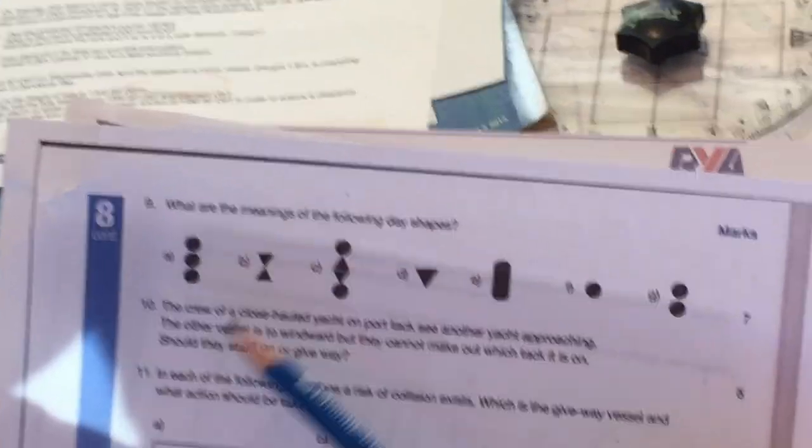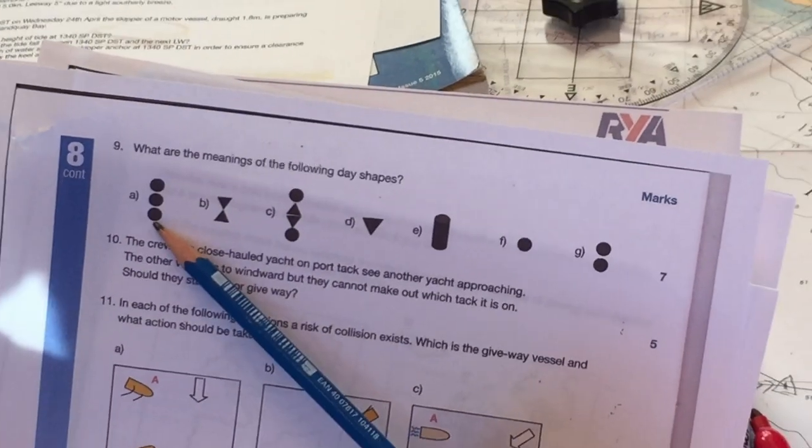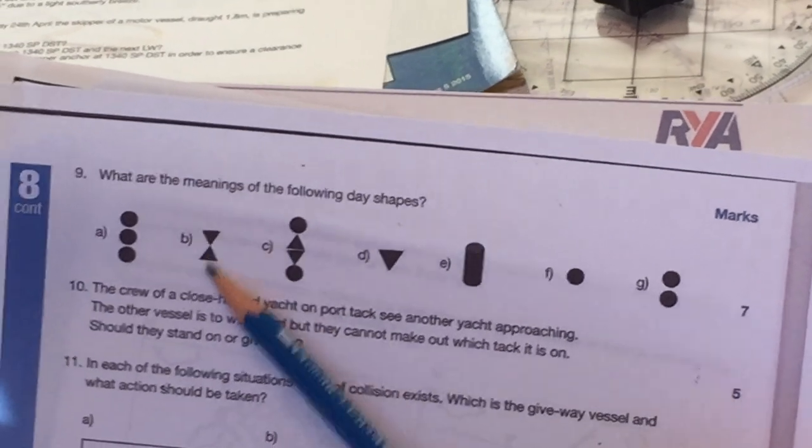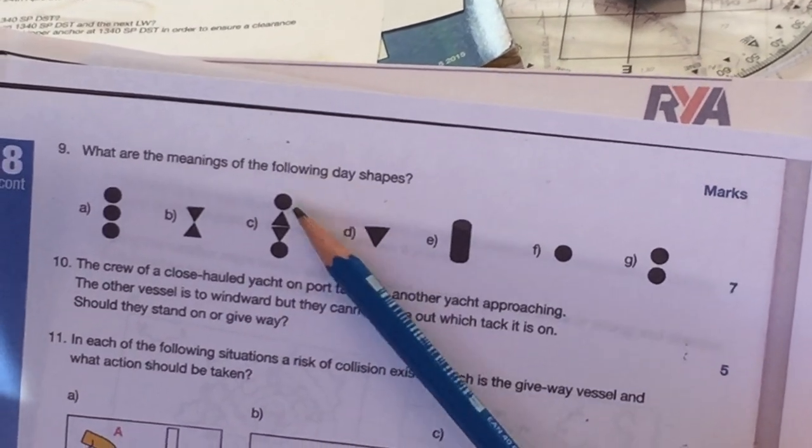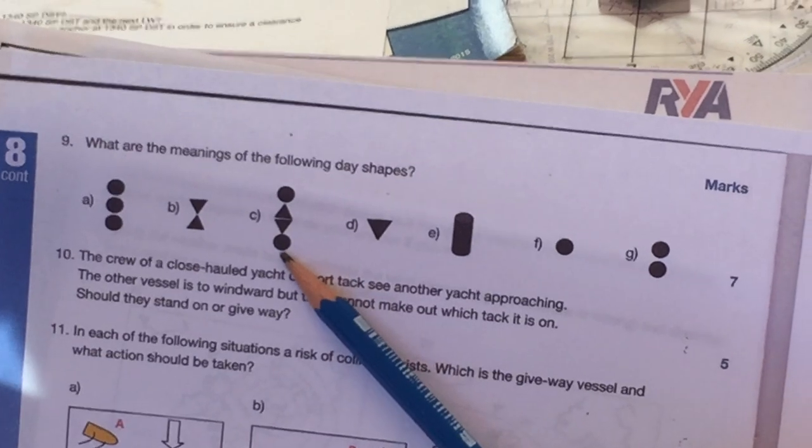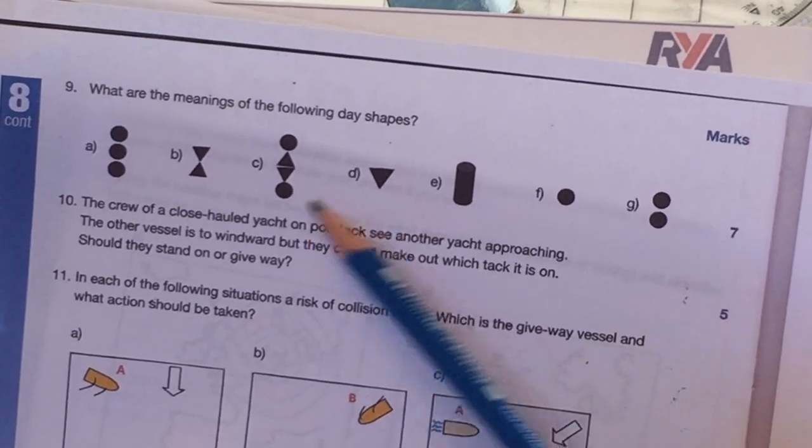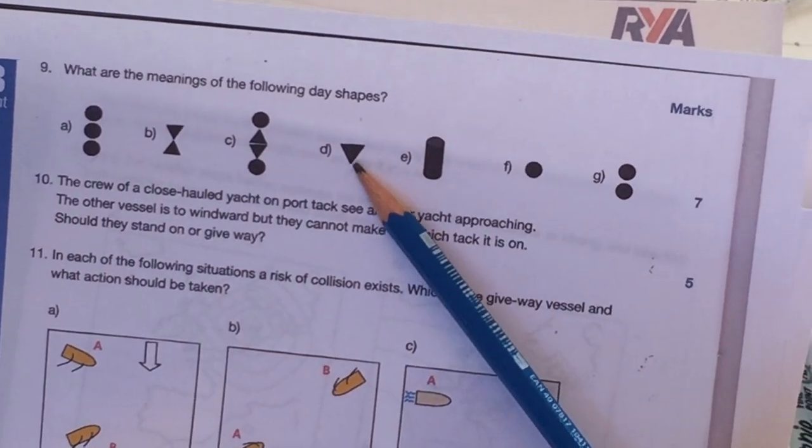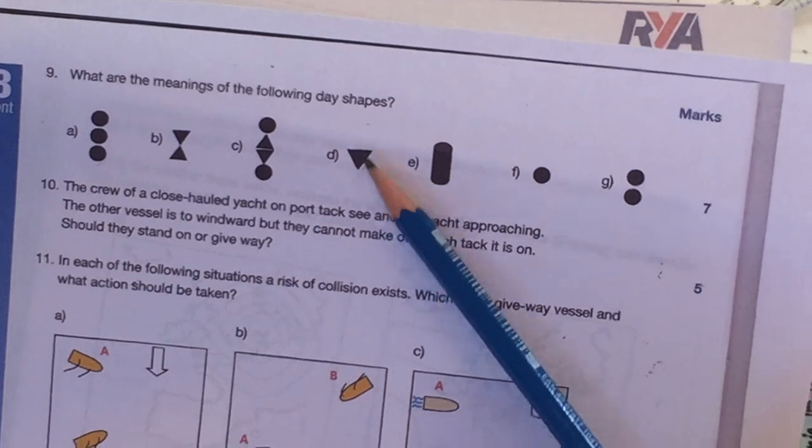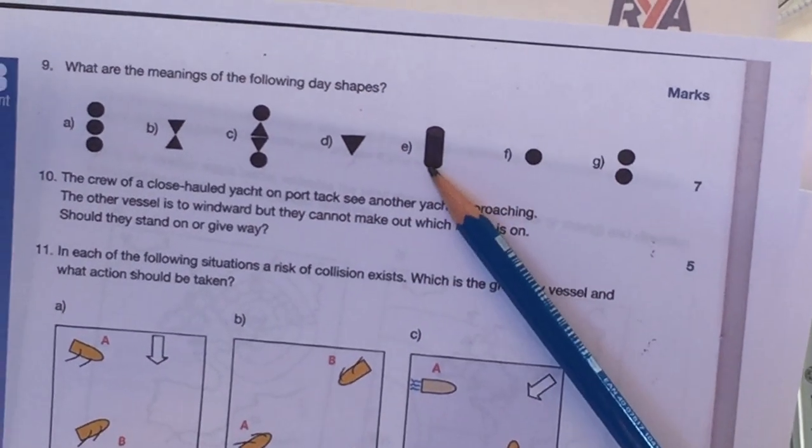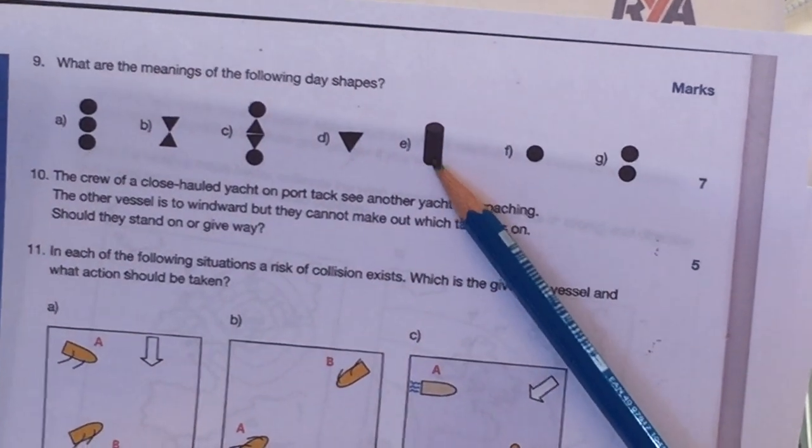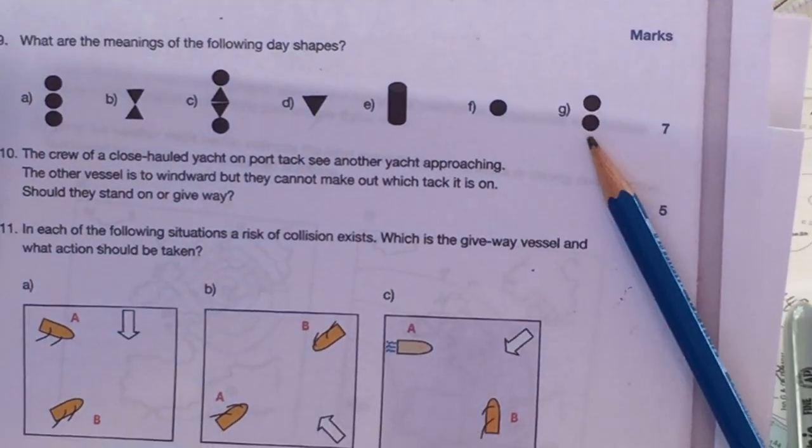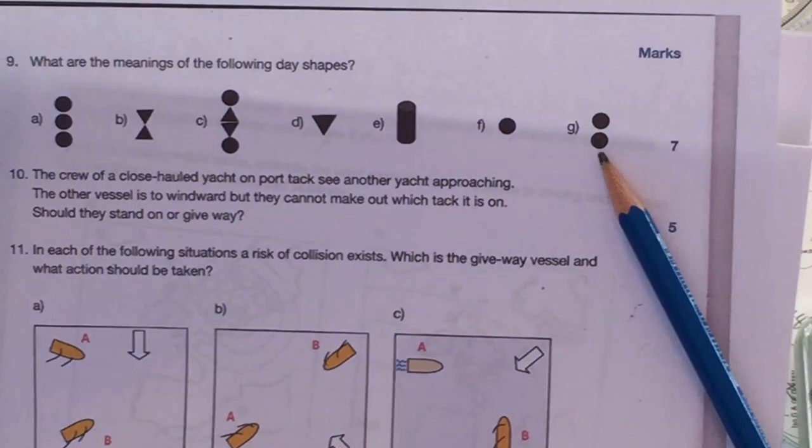What are the meanings of the following day shapes? Three balls, vessel at anchor. Fishing vessel. Ball, diamond ball, vessel restricted inability to maneuver. Cone apex down, that's a sailboat that is motor sailing, so it's using its motor as well as its sails. A cylinder, restricted inability to maneuver. One ball is a vessel at anchor. Two balls, vessel not under command.